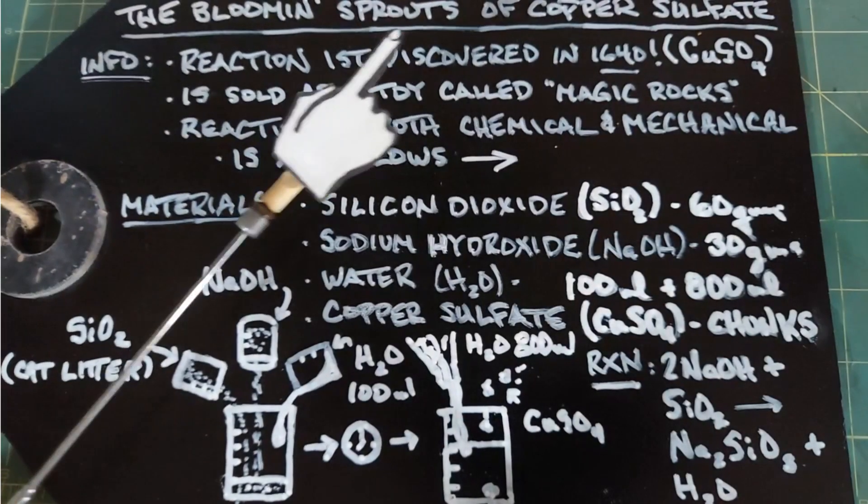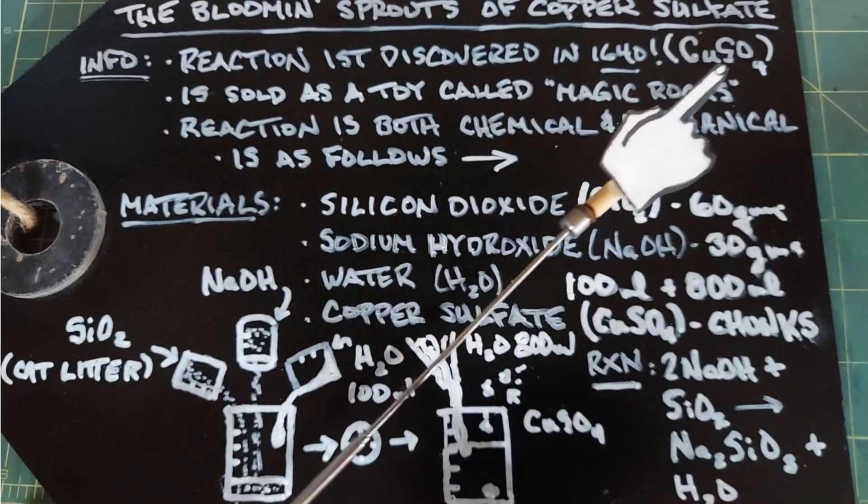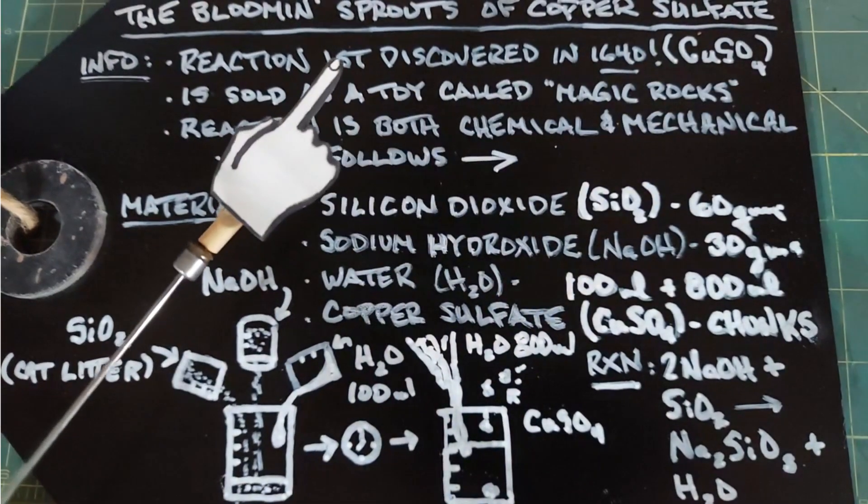In this video we're going to talk about the blooming sprouts of copper sulfate or CuSO4. This is better known as the chemical garden.